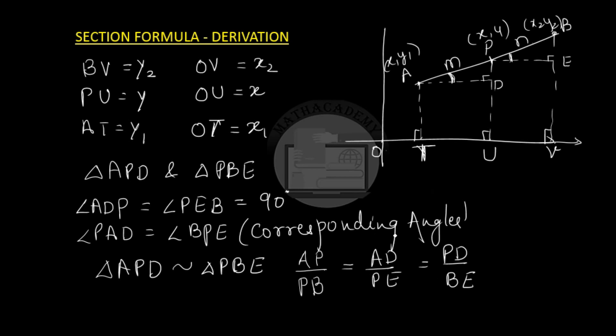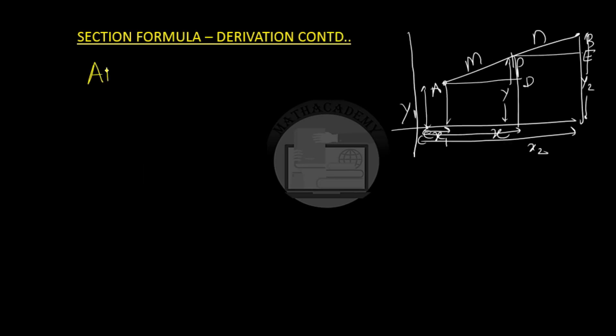Now, our aim is to find the values of AD, DE, PD, and BE. AD is equal to, I can write AD as x minus x1. Similarly, DE can be written as x2 minus x. PD can be written as y minus y1, and similarly, BE can be written as y2 minus y.